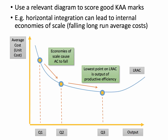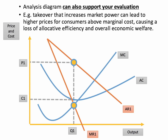It's always good to use a relevant KA analysis diagram. The long-run average cost curve diagram can be used to explain how a takeover might lead to economies of scale and therefore lower long-run average costs, taking a business closer to the minimum efficient scale of production. You can also use an analysis diagram as a prelude and support for good evaluation. For instance, you might argue that takeovers can worsen economic efficiency by leading to more monopoly power — bring in a monopoly diagram. Takeovers that increase market power can lead to higher prices for consumers above marginal cost, causing a loss of allocative efficiency and a deadweight welfare loss.